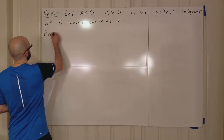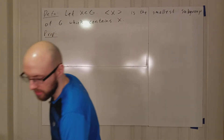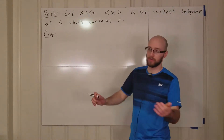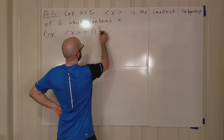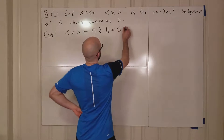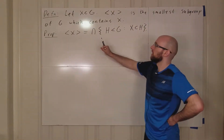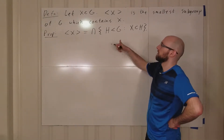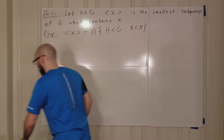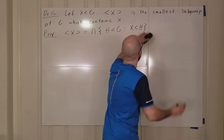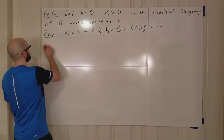We have this proposition, which isn't proven in my lecture notes, but since we don't have that much left to do, I'm going to go ahead and prove it. The subgroup generated by X is the intersection of all subgroups H of G such that X is contained in H. So the smallest subgroup of G which contains X is also the intersection of all subgroups of G which contain X. This is a subgroup of G because of the last thing we proved.